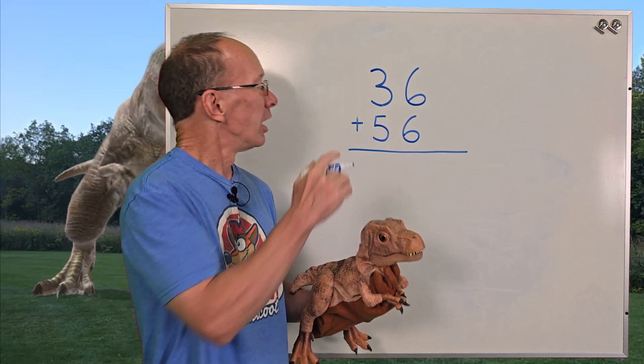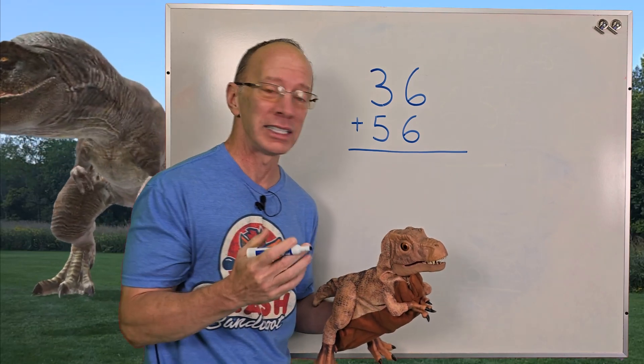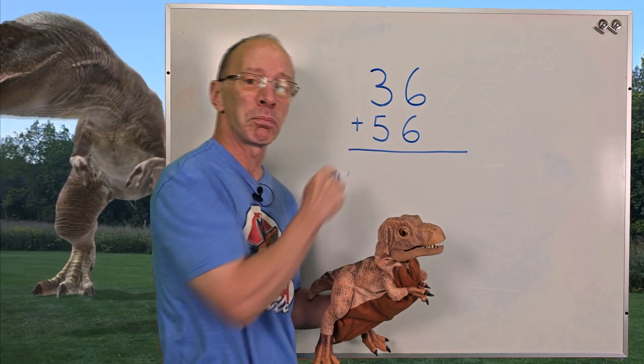All right, let's get right into it. I have a double digit number for addition here: 36 plus 56.